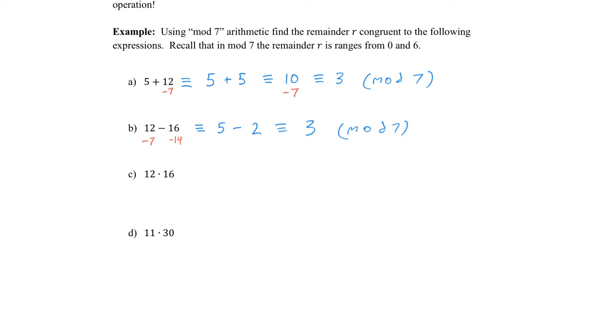In our next problem, we've got 12 times 16. This is where we really get a benefit of reducing first. So again, the 12 gets hit with a minus 7, the 16 gets hit with a minus 14. And this time, instead of multiplying together 12 times 16 and making some big number, we just have to multiply 5 times 2. That gives us 10. And just as above, the 10 is the same as 3 in mod 7.